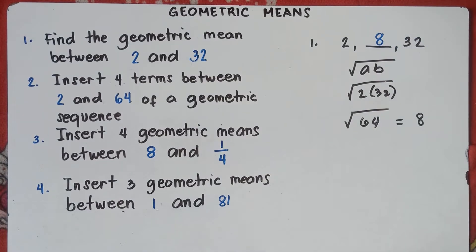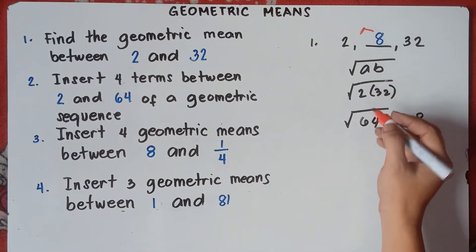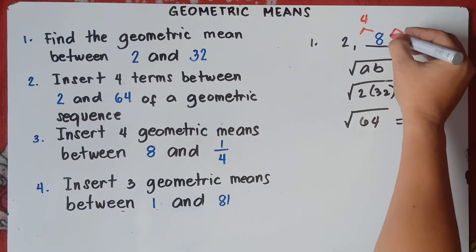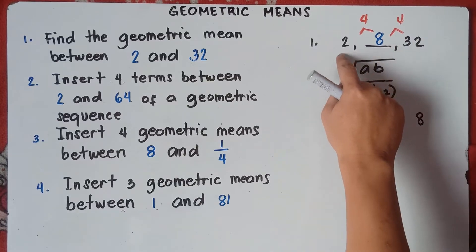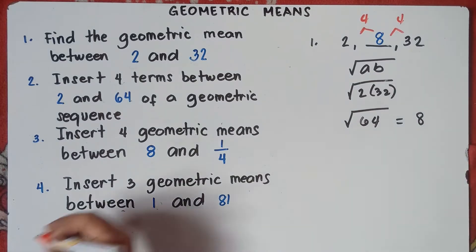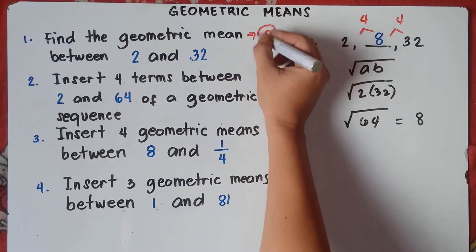Very easy, right? If you are just told to find the middle number of two given terms, simply multiply the numbers and then get the square root — that would be your answer. To get the common ratio, just divide the second term by the first term: 8 divided by 2 is 4, and 32 divided by 8 is 4. We check: 2 times 4 is 8, 8 times 4 is 32. So the answer is 8 for number 1.